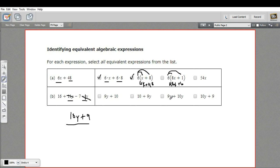Here we have 9y plus 10y. Well, that doesn't make sense. That would be 19y. And we only have 10y here. And finally, here we have 10y plus 9. That's what we came out with in the first place. So this one is the only equivalent expression. So that's how to figure out which algebraic expressions are equivalent to each other.